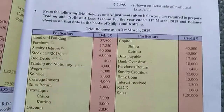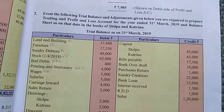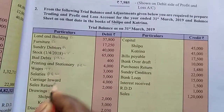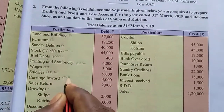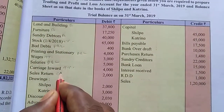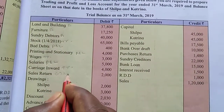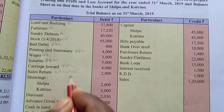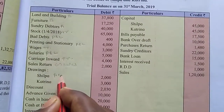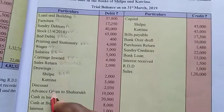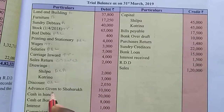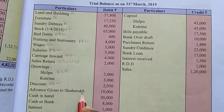Salaries go to profit and loss. Carriage inward goes to trading account. Sales return — minus 2. Sales, drawings — partners capital account. Discount to profit and loss. Advance given to Sharupt.